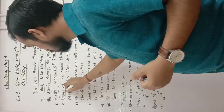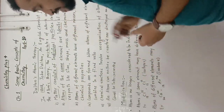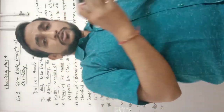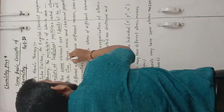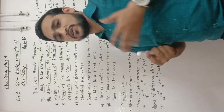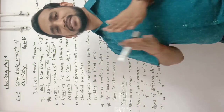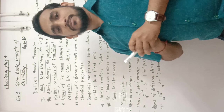The second postulate of the atomic theory is: atoms of the same element are identical. He said that all atoms of the same element are identical in size, shape, mass, and chemical properties. The size, shape, mass, and other chemical or physical properties are the same for different atoms of the same element.